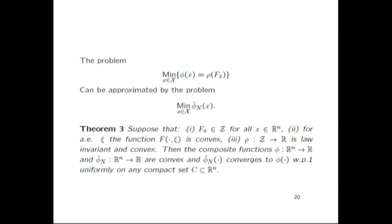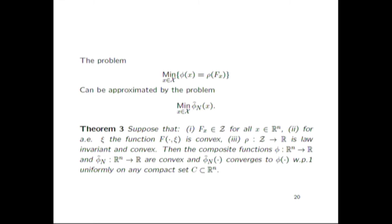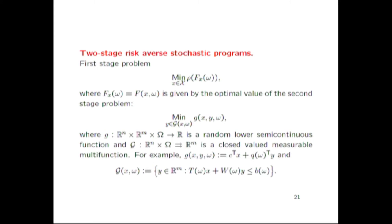So far I haven't had any dynamics. Now, another point: let's look at two-stage programs. In a two-stage problem, there's a first-stage decision and a second-stage decision. At the second stage, you have the corresponding value of the second-stage decision depending on the first-stage decision and randomness. I take the risk of this function. If I take the expected value, this will be the standard two-stage problem — in the linear case, it will be a linear program. There are two equivalent formulations of the risk-neutral case, and the equivalence is based on interchangeability of minimization and expectation.